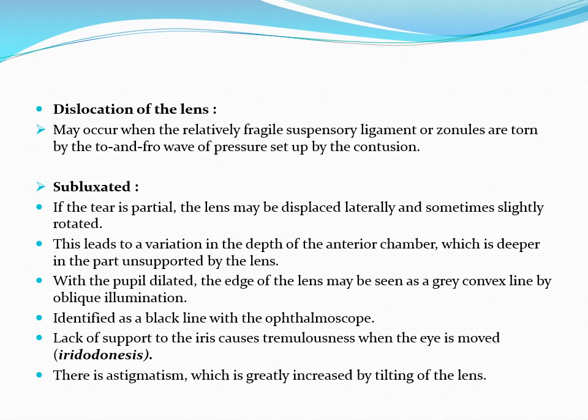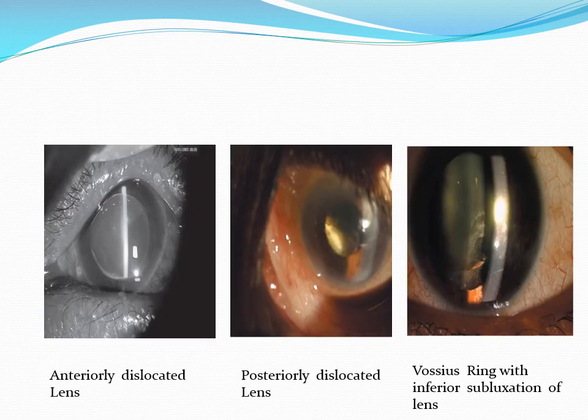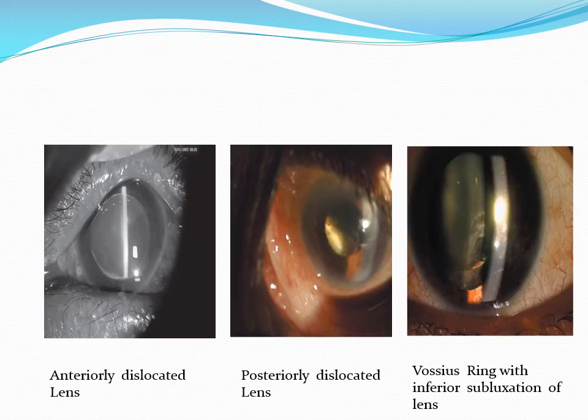Dislocation and subluxation have already been discussed. These pictures illustrate the findings: the first shows an anteriorly dislocated lens that has occupied the total anterior chamber — the major risks are endothelial touch, corneal decompensation, and secondary glaucoma, making it an emergency requiring immediate lens removal. The second picture shows a posteriorly dislocated lens visible in the pupillary area occupying the posterior segment. The third picture shows the Vossius ring.